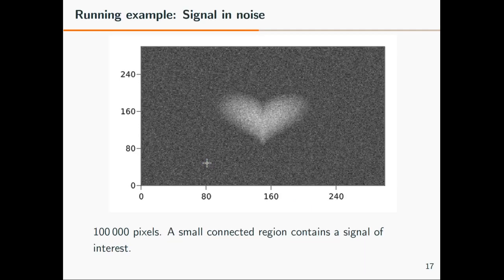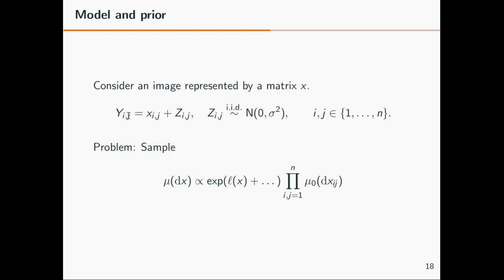So I have a signal in noise. There is some signal which is observed with independent random Gaussian noise. You can already see what the signal is. One property here is that most of the pixels are black. The signal is only in a small region. So it's meaningful to put a spike and slab prior on the color of the pixel, where the spike encodes that the pixel is probably black. Most of the pixels are black.